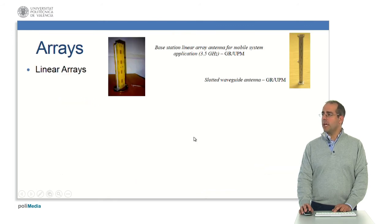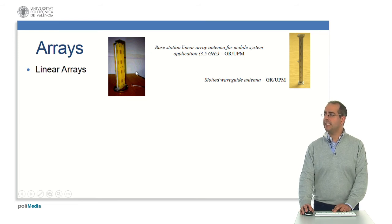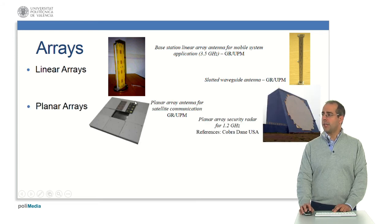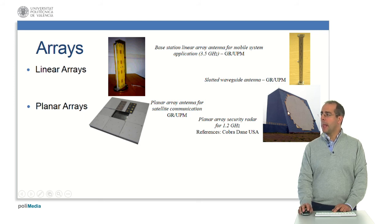Arrays — we have linear array antennas. Here for example a base station linear array antenna for mobile system application at 3.5 gigahertz, and here another example of linear arrays — this is a slotted waveguide antenna. Another example of arrays: this is a planar array antenna. Here for example a planar array security radar for satellite communication, and here a planar array security radar for 1.2 gigahertz.